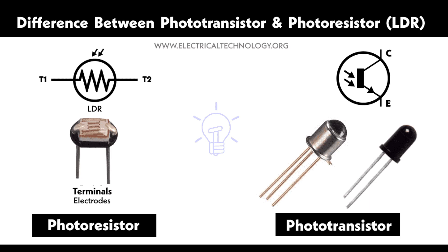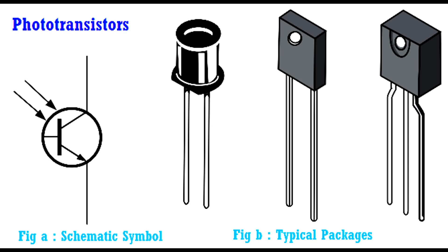Terminals: The collector terminal is connected to the collector region, and the emitter terminal is connected to the emitter region. In some phototransistors, the base terminal may be exposed for external connections, but in many cases it is not externally accessible because the base current is generated internally by the light.